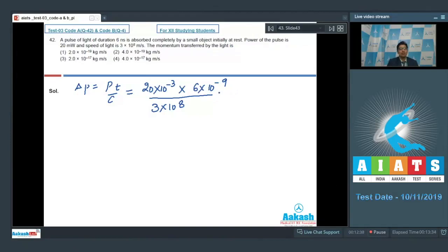On solving this expression, we can get Δp to be equal to 4×10^-19 kg·m/s. Therefore, the correct answer for this question is option number 2.